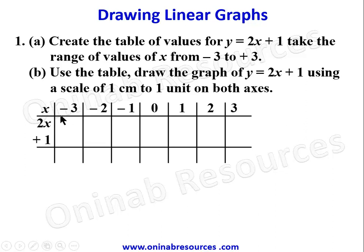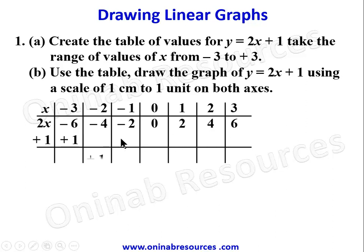For the 2x row: 2 times -3 gives -6; 2 times -2 gives -4; 2 times -1 gives -2; 2 times 0 gives 0; 2 times 1 gives 2; 2 times 2 gives 4; and 2 times 3 gives 6. Since the constant +1 is duplicated across each column, every entry in that row is positive 1.